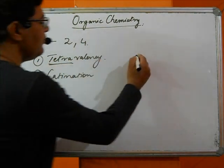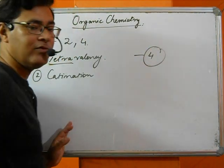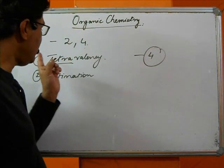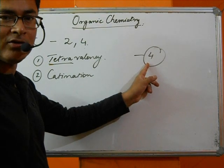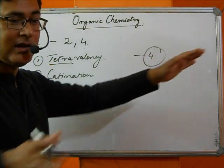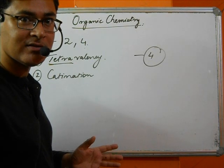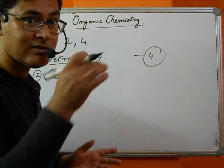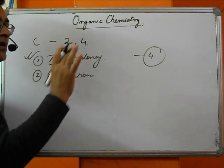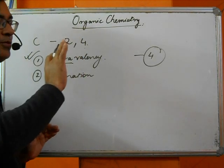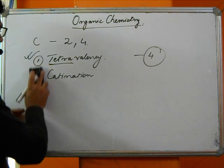Tetra means four. Valency here means a power of four. Because of these four electrons in the outermost shell, carbon can develop four arms to bond with four hydrogens. Tetravalency — having four electrons in the outermost shell — is what makes carbon very unique.